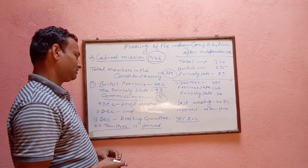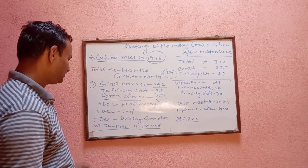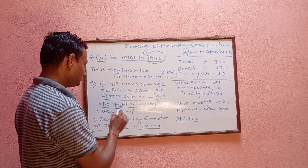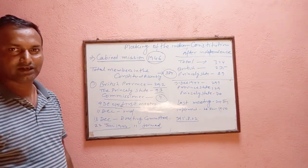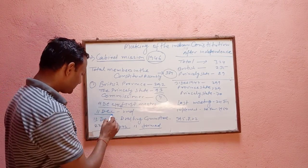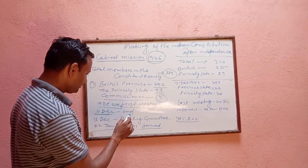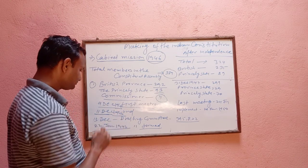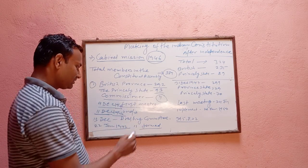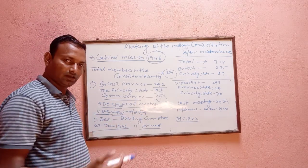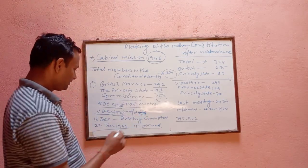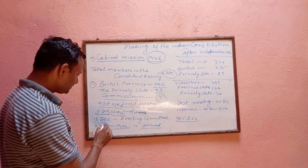After election, the first meeting was held on 9th December 1946. Dr. Sachidananda Sinha was the temporary president of the Constitutional Assembly. The second meeting was on 11th December 1946, and Dr. Rajendra Prasad was elected as the constitutional member president.